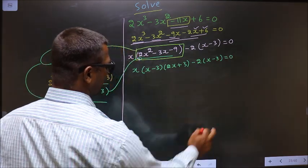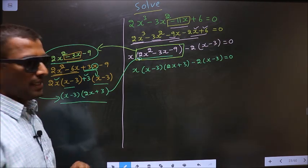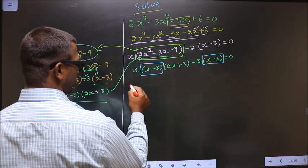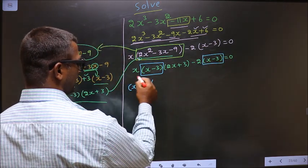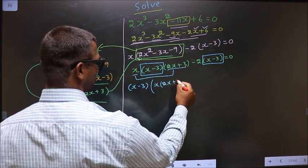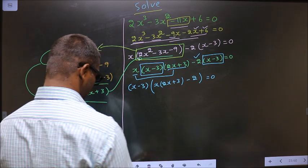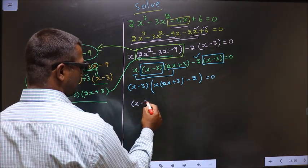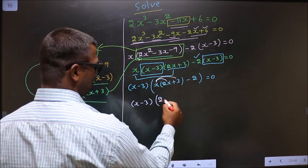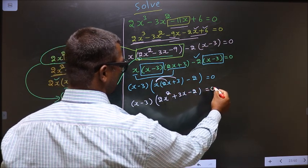Now in this entire equation what can be taken common is x minus 3. So x minus 3 outside. Here you are left with x times 2x plus 3, and here you are left with minus 2, equal to 0. Now x minus 3 — open up the bracket — so you get 2x² + 3x - 2, equal to 0.